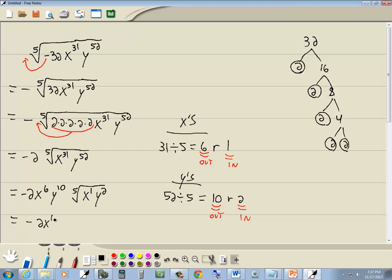Which then gives us negative 2 x to the 6, y to the 10th, then the fifth root of x, y squared. And that's our answer.